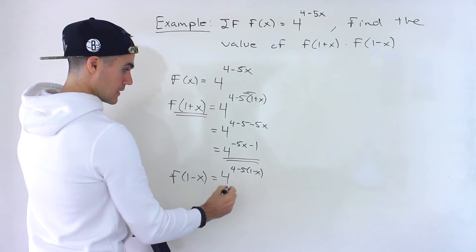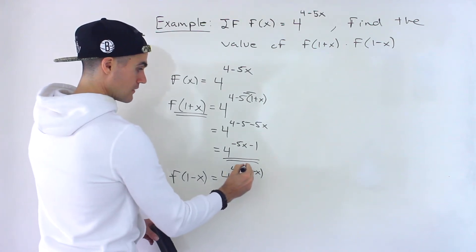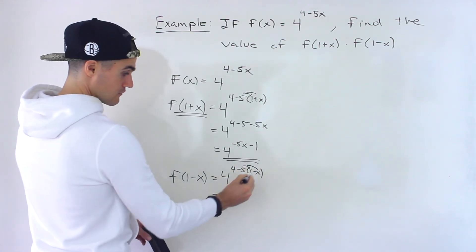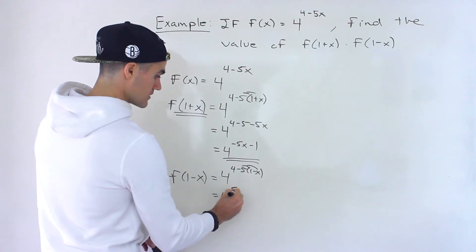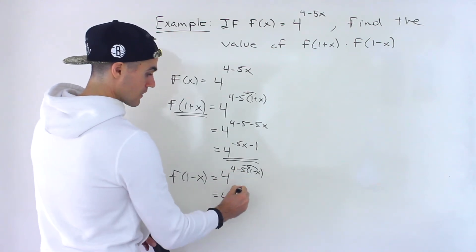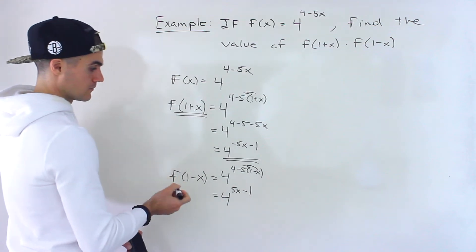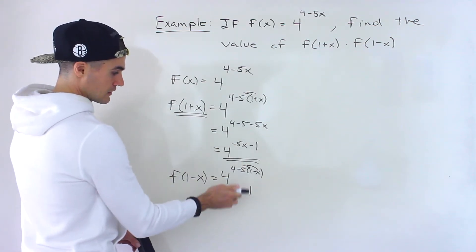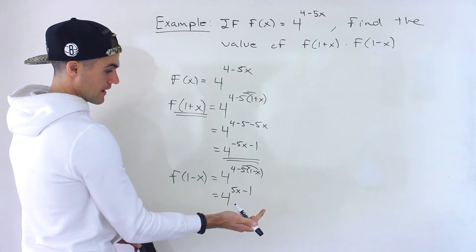That would end up being positive 5x, and then 4 minus 5 would be minus 1. Right, so the only thing that changes is the sign of that.